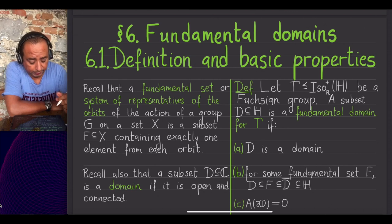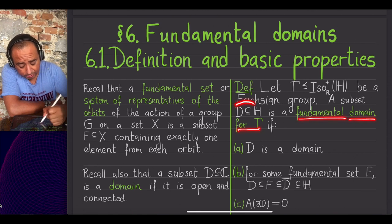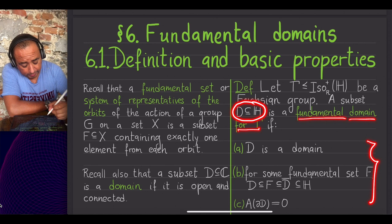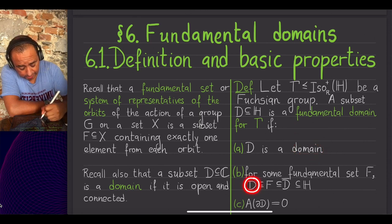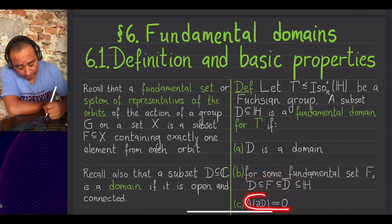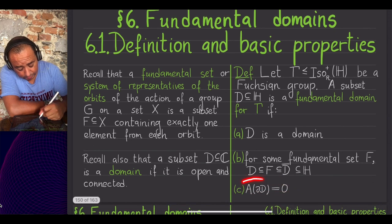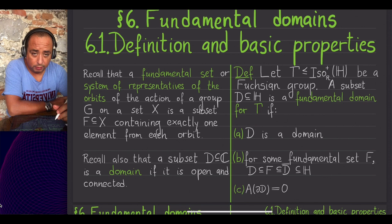Let us keep talking about fundamental domains. Recall the definition: a fundamental domain for a Fuchsian group gamma is defined to be a subset of the hyperbolic plane with three properties — it is required to be open and connected; between the set and its topological closure in H sits a system of representatives of the orbits of gamma; and the hyperbolic area of the boundary is zero, so the boundary is not very big, informally speaking.